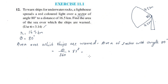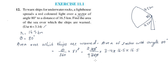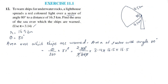We substitute theta = 80 degrees, divided by 360, multiplied by pi which is 3.14, and r = 16.5, so r squared = 16.5 squared. We now calculate 16.5 squared: 16.5 × 16.5. We work through the multiplication step by step.